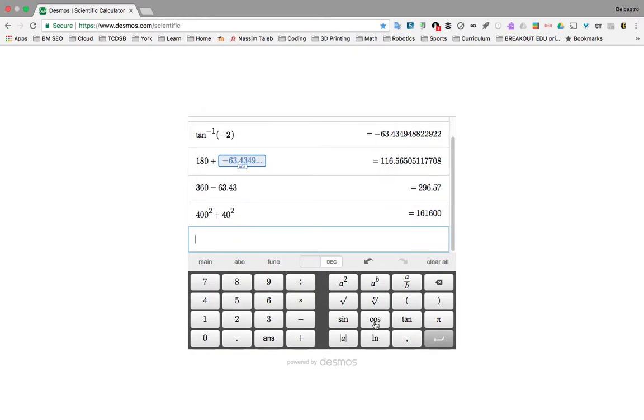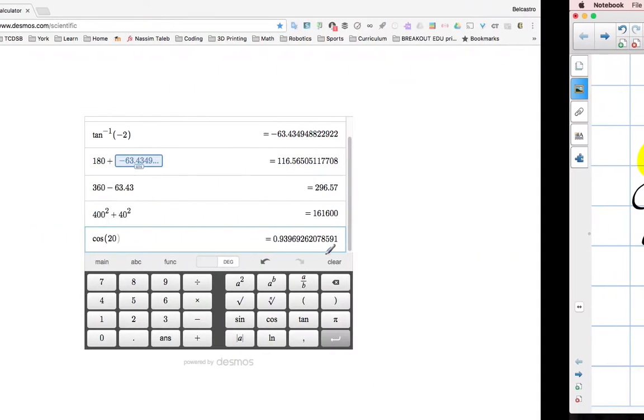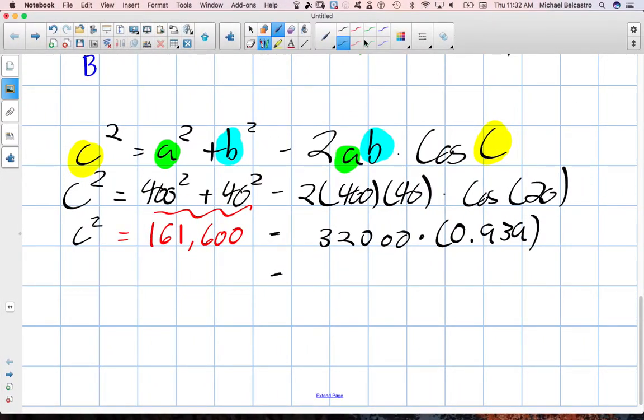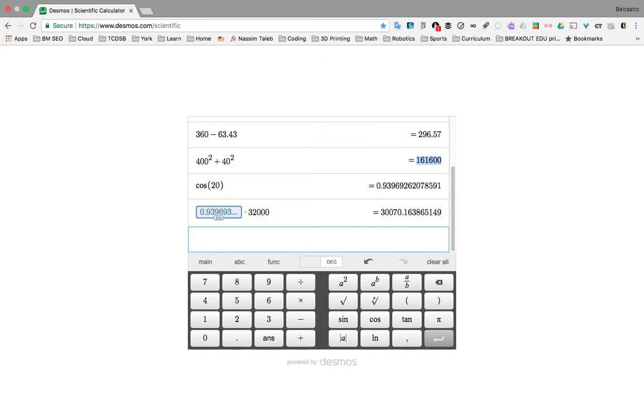So, 32,000 times what is cos 20? I don't know. So, I'm going to put it in here. Cos of 20. So, approximately 0.939. I'm going to keep that exact answer and multiply it by 32,000. And it ends up at 30,070, we're going to say. So, it was approximately 30,070. We still have 161,600. Subtract 30,070. Let's take those values. What's neat about this calculator is we can kind of copy and paste our answers all the way through.